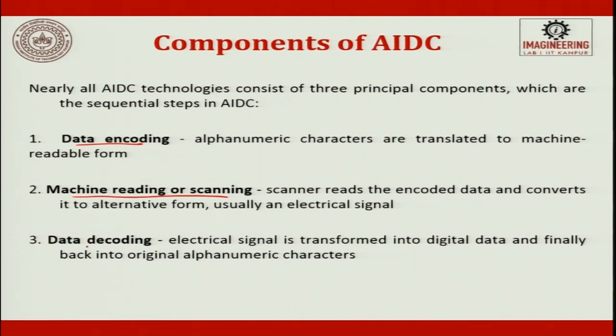An AIDC system typically consists of three major components: data encoding, machine reading and scanning, and data decoding. Data encoding means the data must be readable by the computer wherever it is stored — alphanumeric characters are translated into machine-readable form. A code is a set of symbols or signals that represent these characters, and a label or tag containing the encoded data is attached to the item. For example, in large shopping centers, QR codes or barcodes are attached to items — some are simple bar codes, and QR codes used with WhatsApp are two-dimensional matrix barcodes.